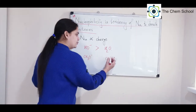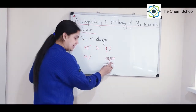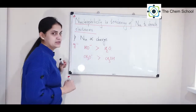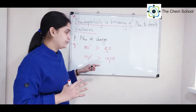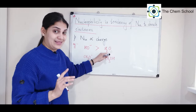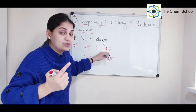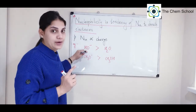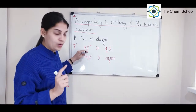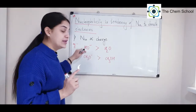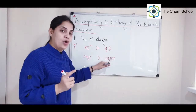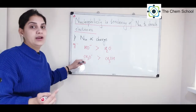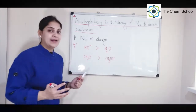Similarly, methoxide ion (CH3O-) is more nucleophilic than alcohol because oxygen has a negative charge in methoxide. When water loses a proton it behaves as an acid and the conjugate base obtained is always a stronger base. Alcohols are weak acids, so their conjugate base — methoxide — is a stronger base and more nucleophilic.